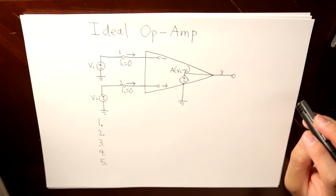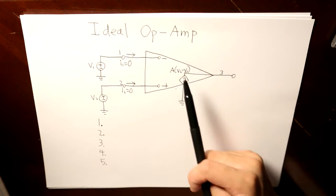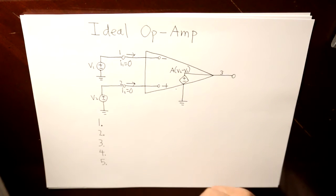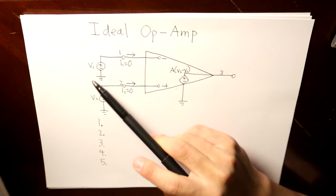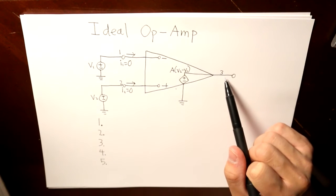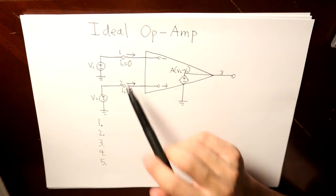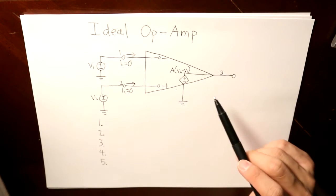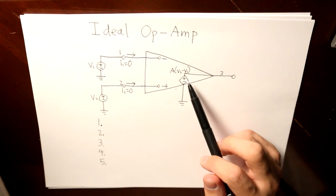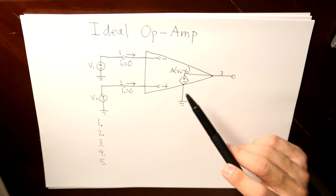Now let's get to an ideal op amp. As you can see, the ideal op amp has three pins and also has the power supply. You can see that V1 corresponds to pin 1, V2 corresponds to pin 2, and V3 corresponds to the output terminal. Each input current is zero, and the output terminal contains an open loop gain A multiplied by the difference between V2 and V1.